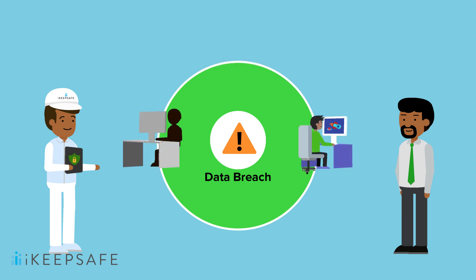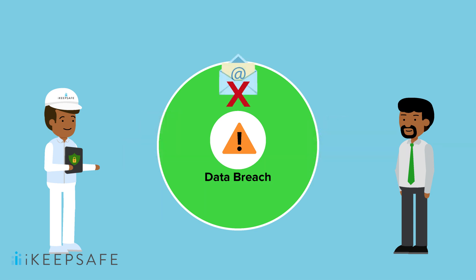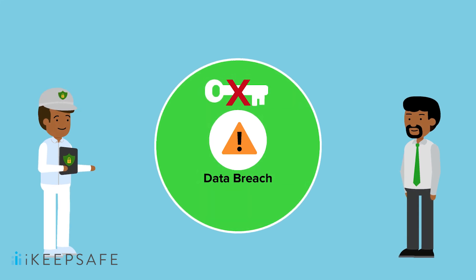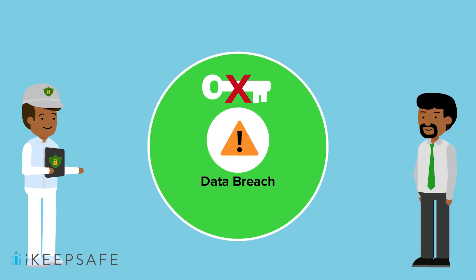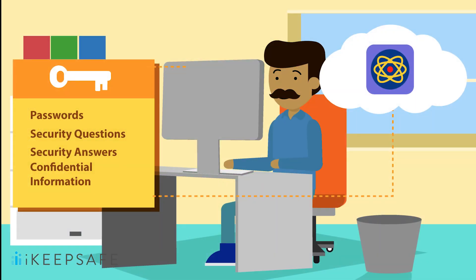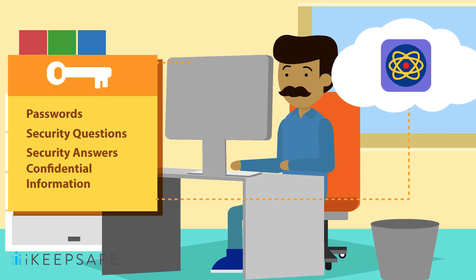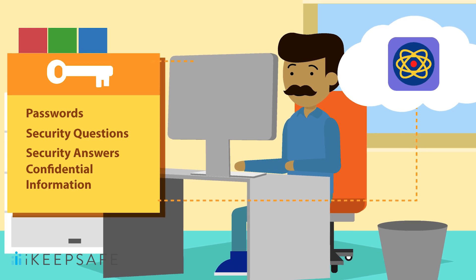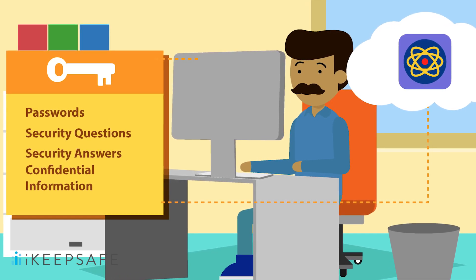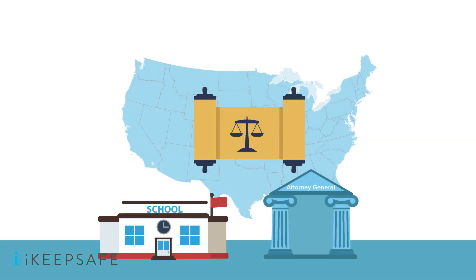Most data breaches are the result of human error rather than attacks by hackers. Even something as simple as incorrectly sending an email can result in a data breach. Using weak passwords for online accounts is another common way we put ourselves at risk. In cases where school employees are involved in a breach, they need to change their passwords, security questions and answers, and other confidential information contained on the digital platform. Some states require schools to report breaches that affect large numbers of people to the Attorney General's office. Make sure to be aware of your state's individual requirements.